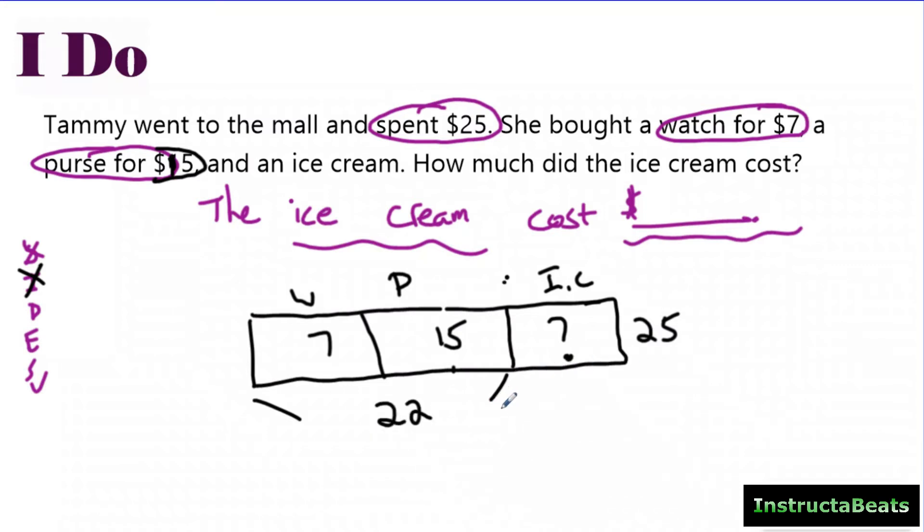So I'm going to combine the pieces that I know, and that's going to be $22. And so now I want to know, $22 plus what is going to equal my $25. And you could write the algebra equation over here too, just to continue to practice that for some of your high students.